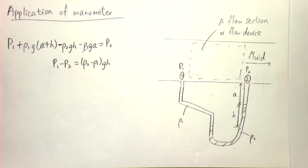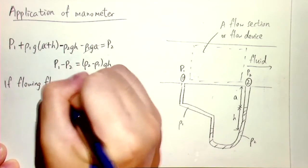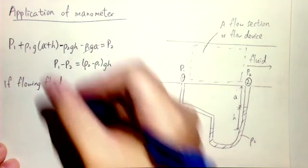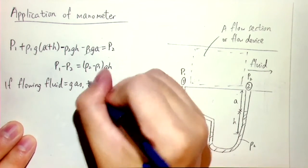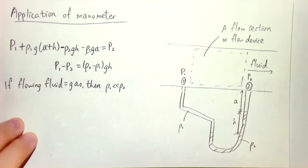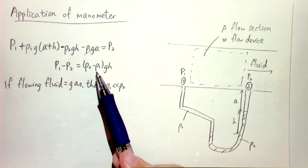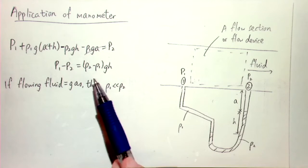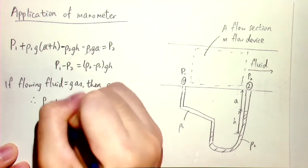If the flowing fluid is a gas, for example in an air duct, then rho 1 is much smaller than rho 2. Because inside the manometer we use a liquid as manometer fluid, rho 2 minus rho 1 is approximately equal to rho 2. So the equation simplifies further to approximately rho 2 times g times h.